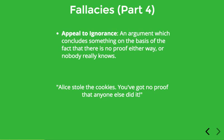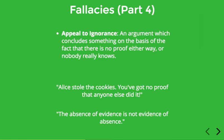The idea behind this fallacy is sometimes expressed in the phrase: the absence of evidence is not evidence of absence. In other words, just because you can't find evidence of something doesn't necessarily mean that it's not the case. The person is assuming that because there's no evidence that anyone else took the cookies, then it wasn't anyone else, so it must be Alice. But this is a very weak form of reasoning. You can't reliably infer that something is the case just because we haven't been able to prove the opposite.